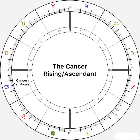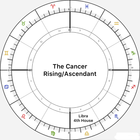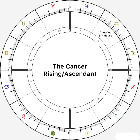We're going to start with the Cancer Ascendant. Cancer is the fourth sign, the mother, basically. So we're going to talk about the Cancer Ascendant. As you see right here, we got Leo on the second house cusp, Virgo on the third house cusp, Libra right here, Scorpio right here on the fifth, Sagittarius on the sixth house cusp, Capricorn on the seventh, Aquarius on the eighth, Pisces on the ninth, Aries is the tenth house, Taurus is going to be the eleventh house, and Gemini is going to be the twelfth.